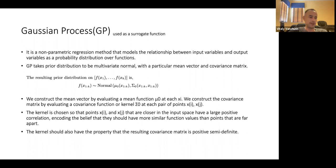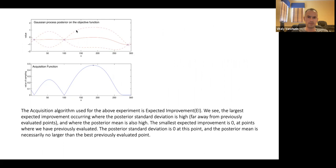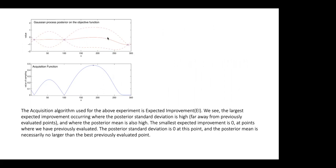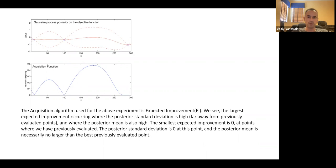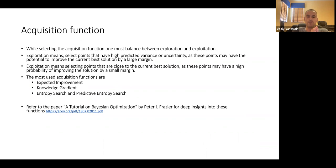Well, the question is: how do you define where you have the least data? What the acquisition function does is take points where we have the highest value of sigma as the next input points. But you can have a high sigma depending on how you stretch your x-axis — you may know a lot about a short space, but the loss function changes rapidly there, and you'd want to go to that region.